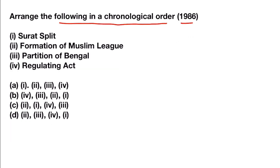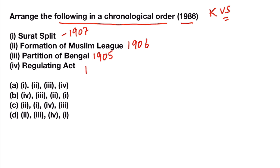Arrange the following in chronological order. Asked in 1986 UPSC and then repeated in KVS TGT exam: Surat Split, Formation of Muslim League, Partition of Bengal, Regulating Act. Surat Split happened in 1907. Muslim League was formed in 1906. Partition of Bengal took place in 1905. And the Regulating Act was passed in 1773. So the answer will be 4-3-2-1.